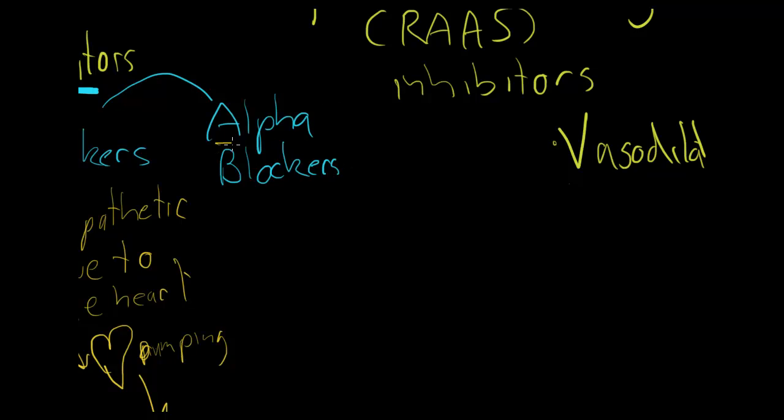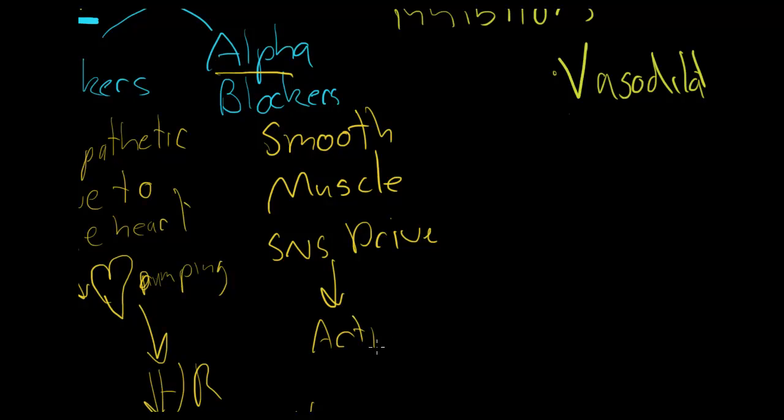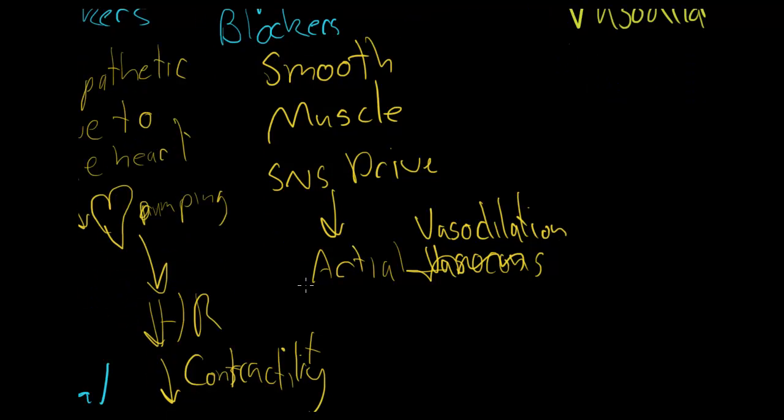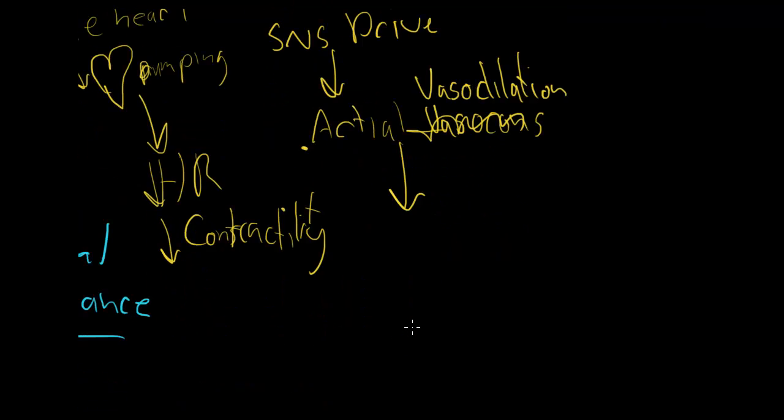On to your alpha blockers. Now your alpha receptors are more in your smooth muscle. So they act on smooth muscle. Smooth muscle is in your arteries. So by doing that, by decreasing the SNS drive of your smooth muscle, to the smooth muscles, means they're not going to be constricted as much. So it's going to cause arterial vasodilation. Or in the very least, reduced constriction. And that works in the veins as well.